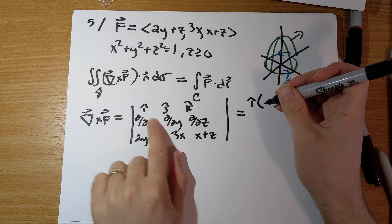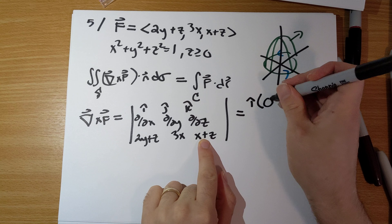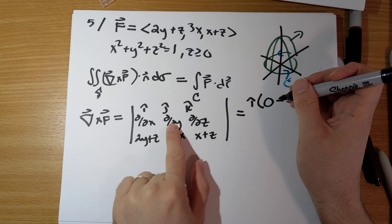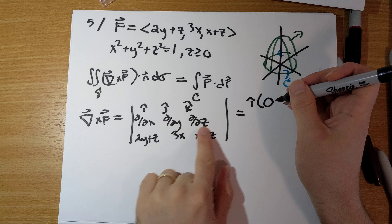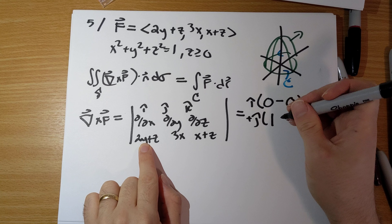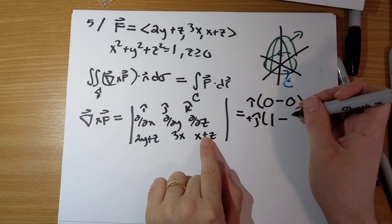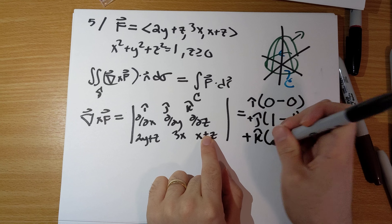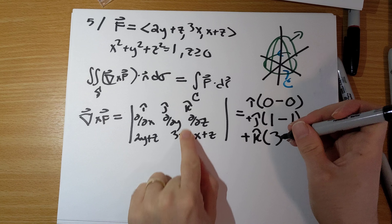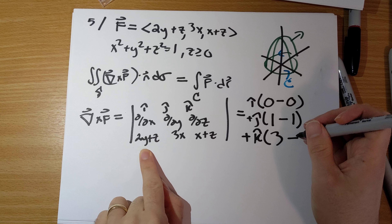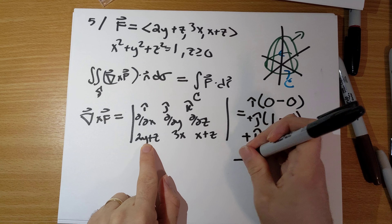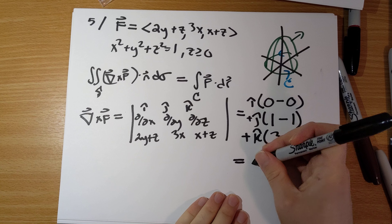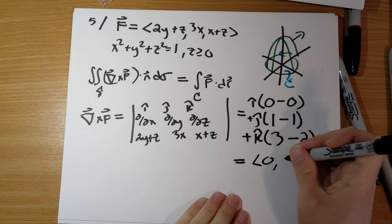The i-hat term is the partial of (x+z) with respect to y — that's 0 — minus the partial of 3x with respect to z — that's 0. The j-hat term is the partial of (2y+z) with respect to z — that's 1 — minus the partial of (x+z) with respect to x — that's also 1, giving 0. The k-hat term is the partial of 3x with respect to x — that's 3 — minus the partial of (2y+z) with respect to y — that's 2. So curl F = (0, 0, 1).